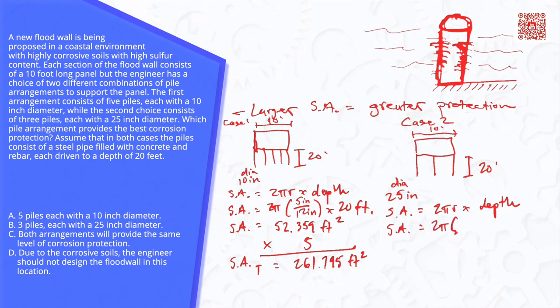So again, 25 inches, half of 25 is 12.5 inches because we want the radius divided by 12 inches per foot. Keep our units consistent in feet times 20 foot depth.